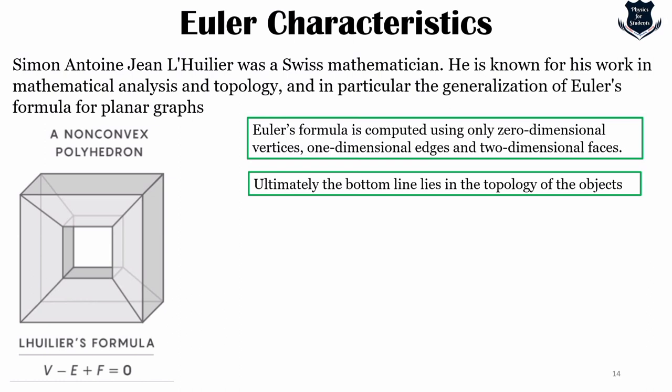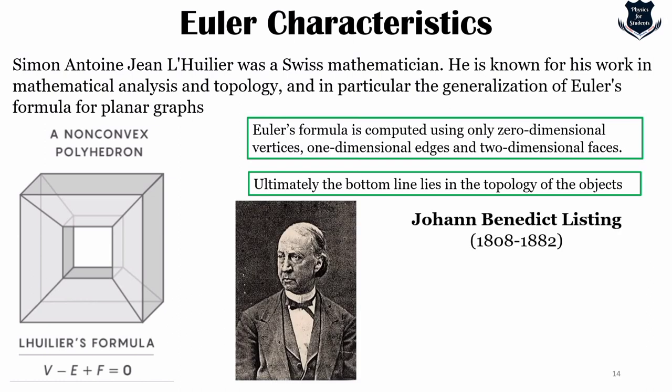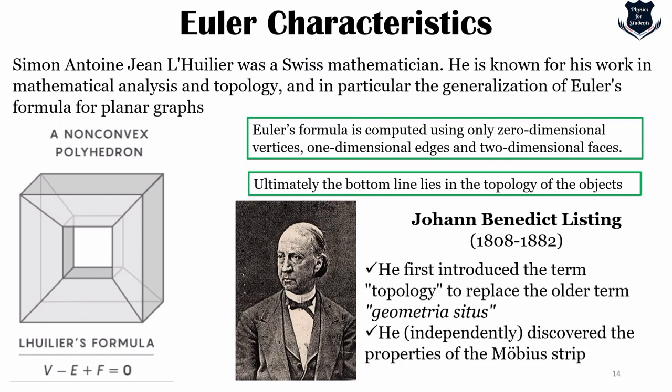This topological understanding of Euler's formula — where shapes are stretched like rubber and are not rigid — was first presented by Johann Benedict Listing around 1861. Although not much remembered today, Listing is actually the first who replaced the term 'geometria situs' with 'topology', and is first known to have discovered the property of the Möbius strip.